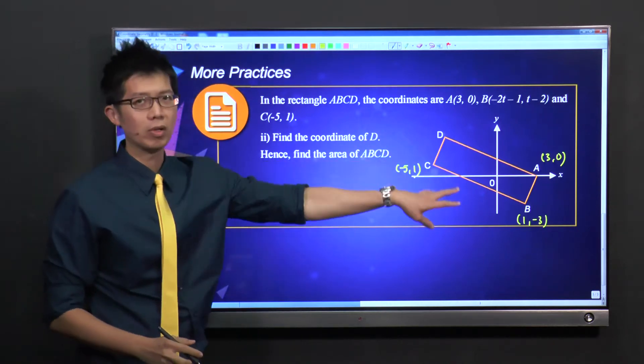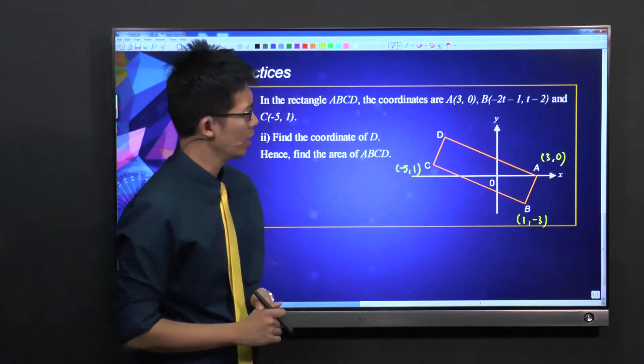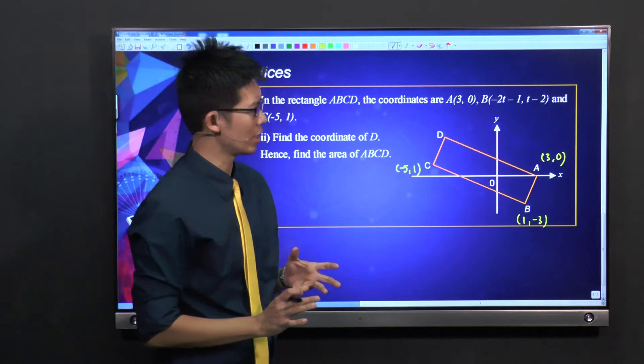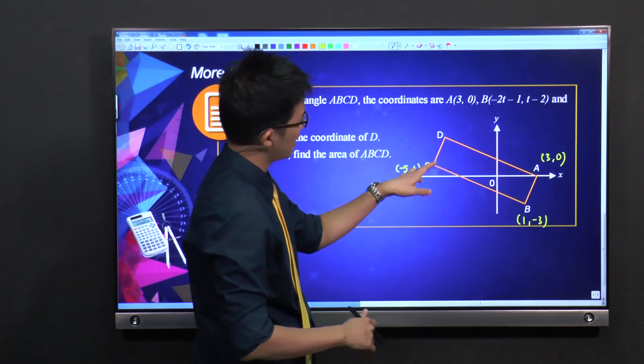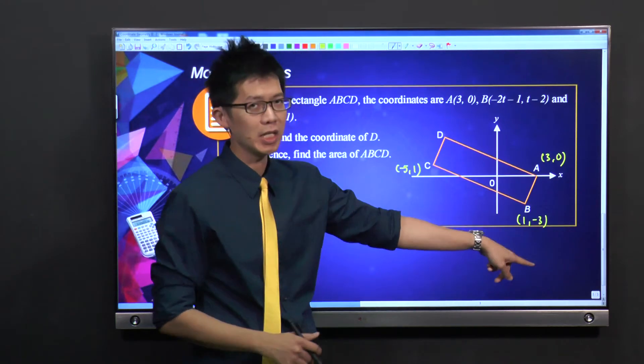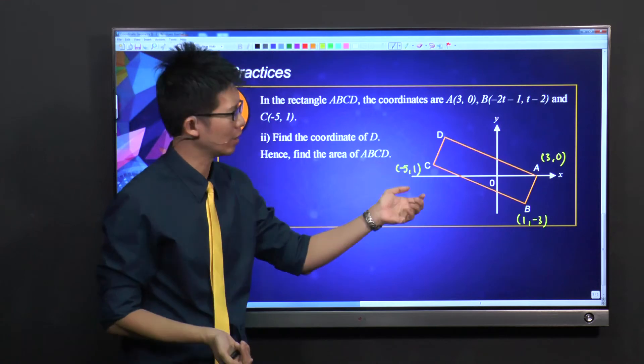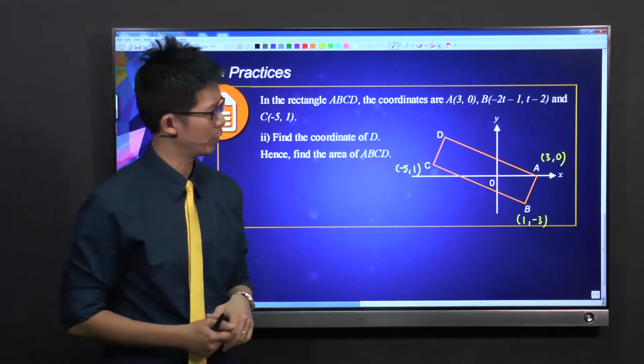So how do we find D? There are quite a few methods. The most commonly used in schools is the midpoint. You find the midpoint of AC, and this midpoint will be the same as the midpoint for BD. You let D be (x, y) and then find x and y. That's probably one of the easiest ways to do it.